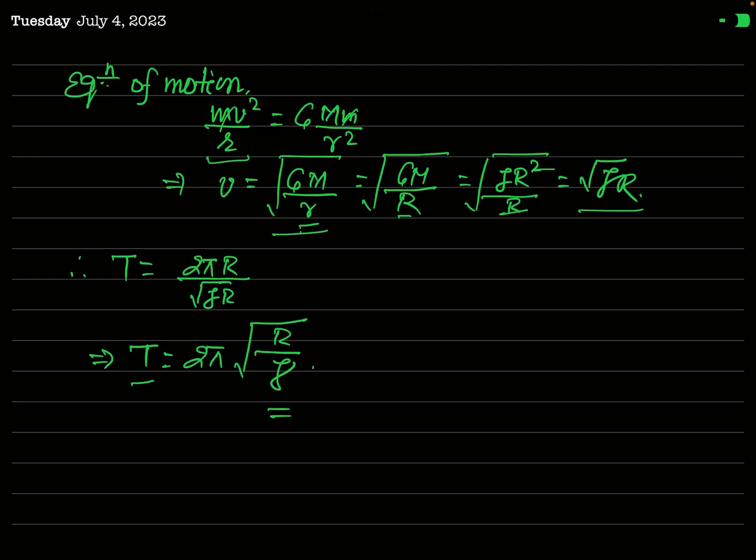So in all three cases — a simple pendulum of infinite length, a particle oscillating about the center of the earth through a tunnel, and a satellite moving in circular orbit very close to the surface of the earth — the time period is not infinity, but has the same finite value: 84.3 minutes. I think you have definitely enjoyed this lecture. Thank you very much.